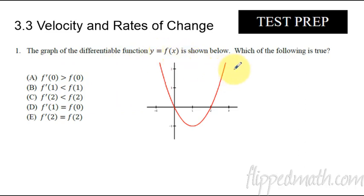The graph of a differentiable function is shown below, which of the following is true? When you see the f prime, that just means you're talking about slope. So every one of the little things here on the left is representing slope. Over here is just a y value. So we're saying, is the slope at zero greater than the y value at x equals zero? We're just trying to figure out which one is true.